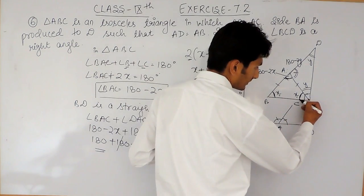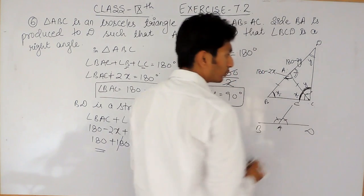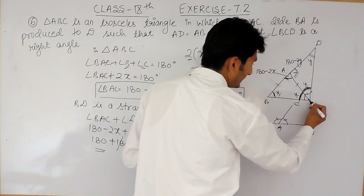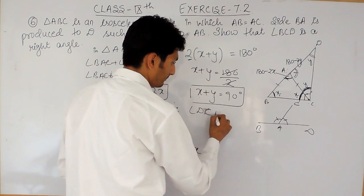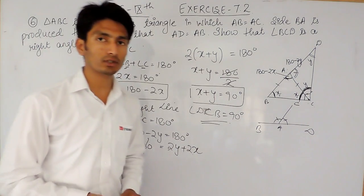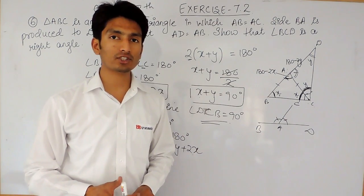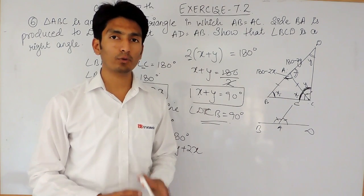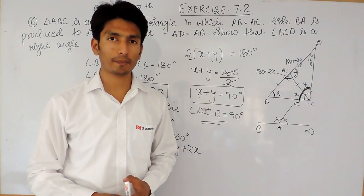Since this angle is X and this angle is Y, X plus Y equals 90 degrees. And instead of X plus Y, we can write this as angle DCB, which equals 90 degrees. That is how you solve this question. I hope you understood. If you like this video, please subscribe to our channel. If you have any problem in math, you can contact us — the phone number, email address, and WhatsApp number are given in the description. Thank you.